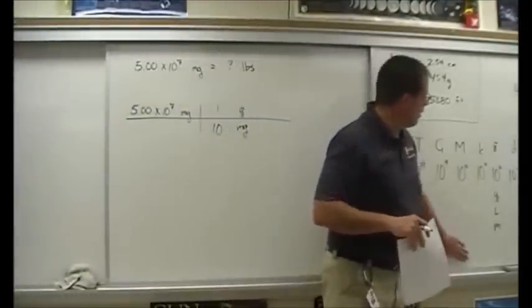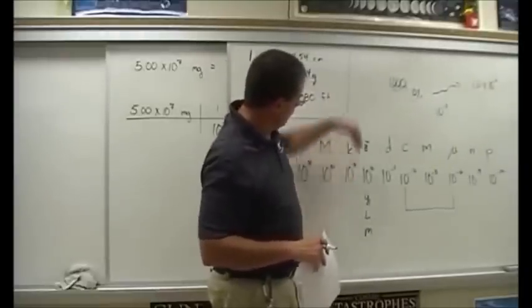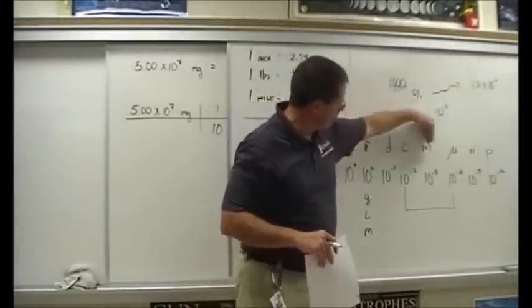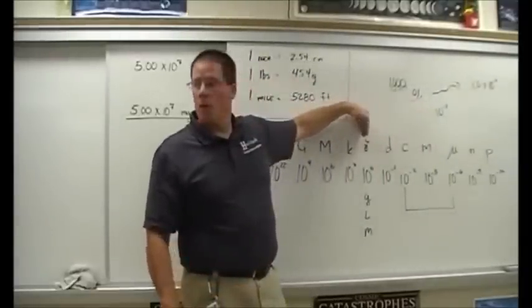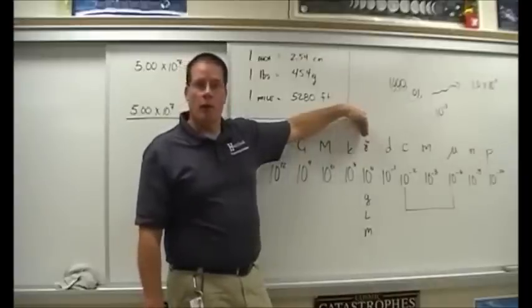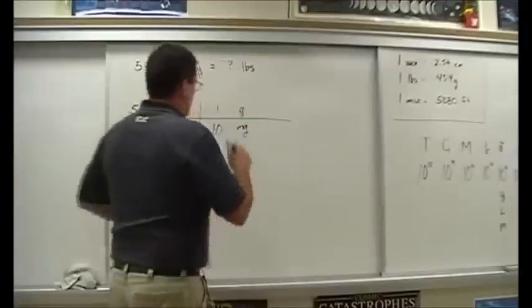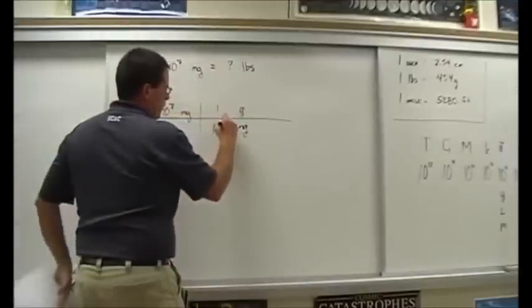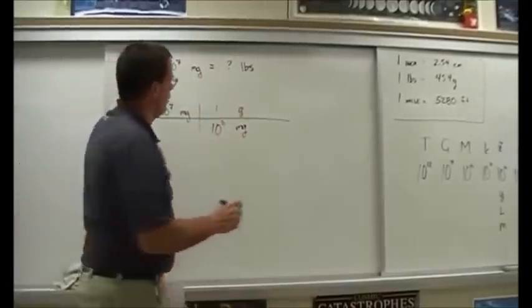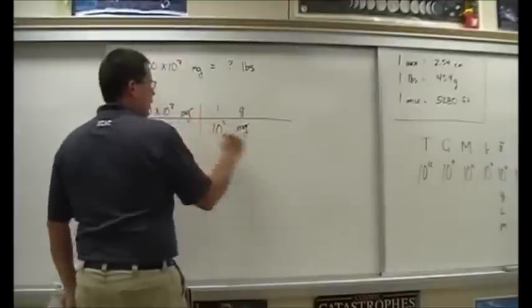How many milligrams in a gram? 10 to the what? So here's 10 to the zero; milli is at 10 to the negative three. So how many times do I move the decimal? Three times. So 10 to the three is a thousand — if you want to do scientific notation or just a thousand, that's fine. So our milligrams are gone.